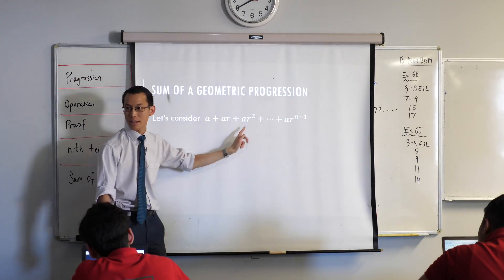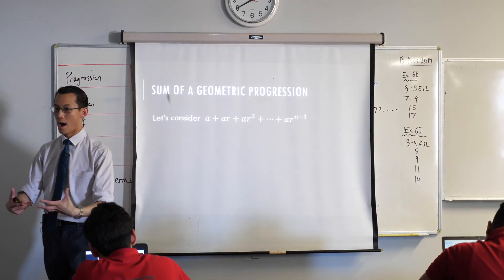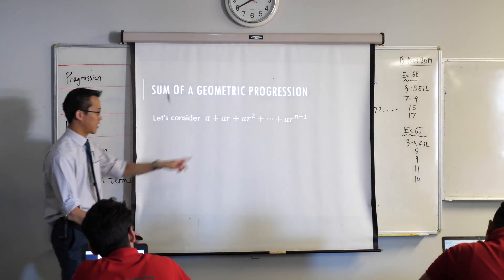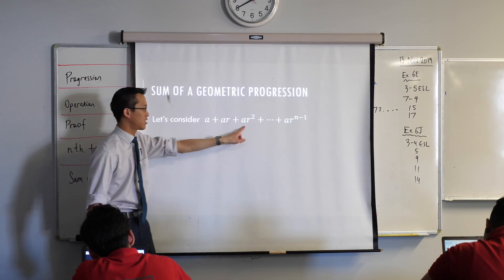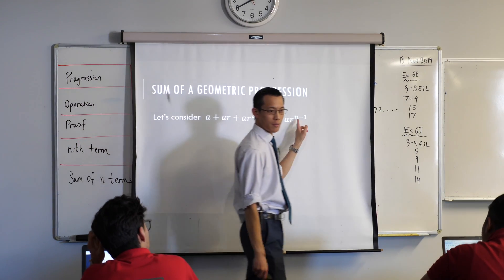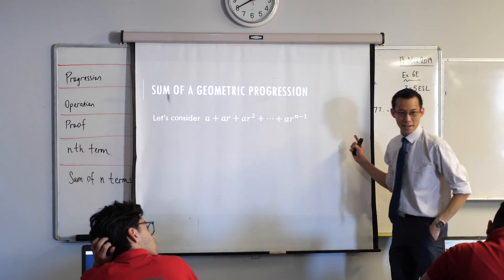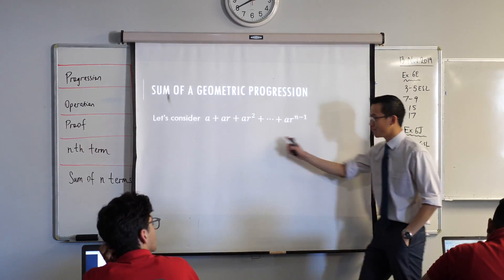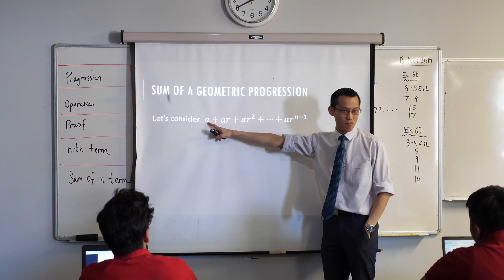You can see I've got the second term being AR, the next term along being AR squared. Why is my last term got n minus 1? This guy doesn't have any R's on it right, so this is term number n on the end.